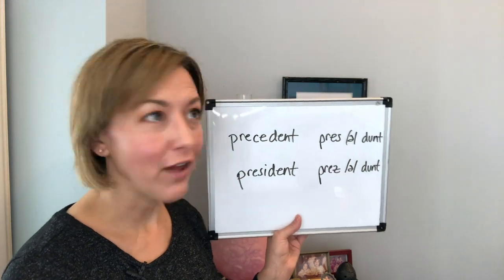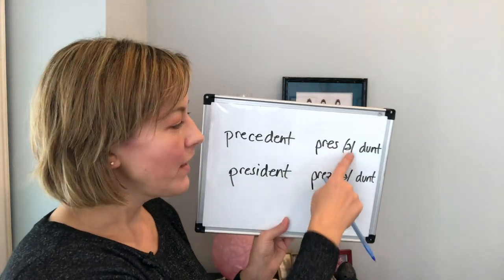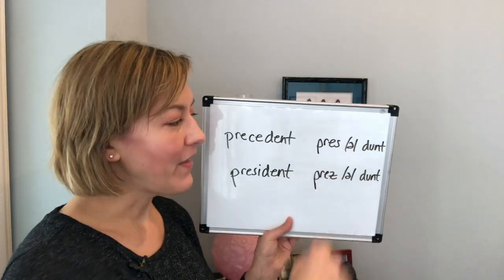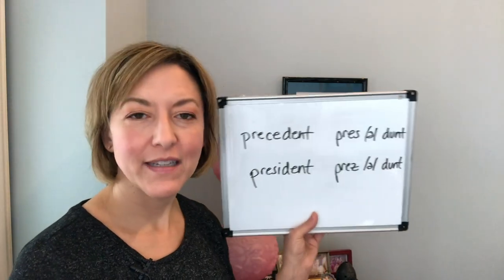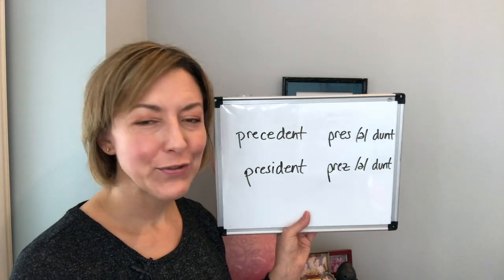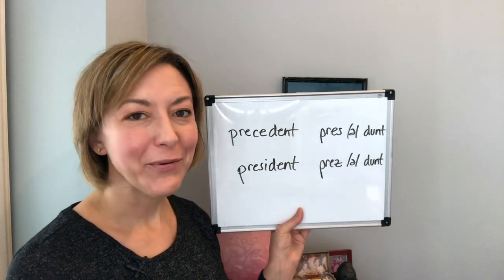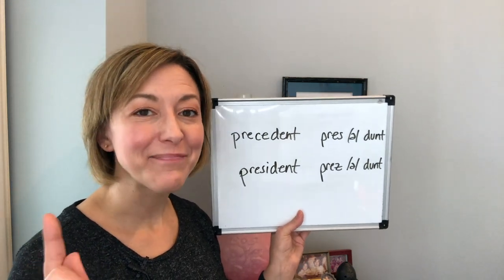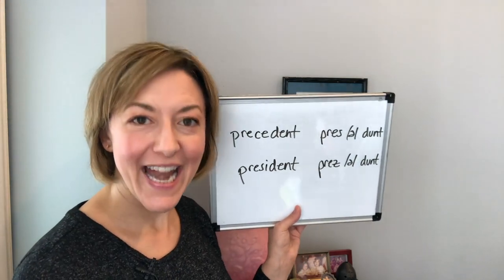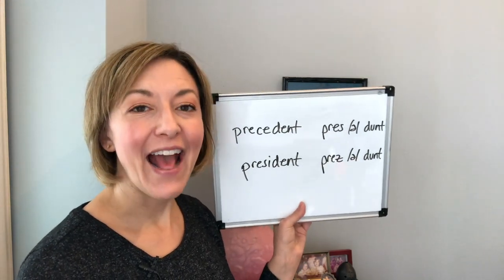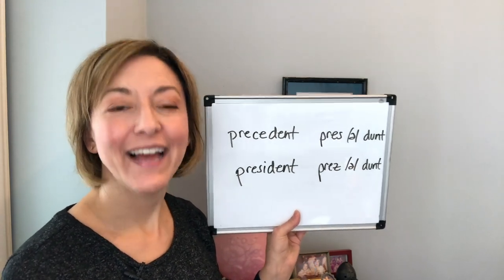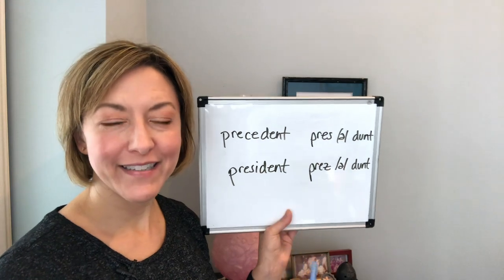Then move to the short 'uh' sound with a relaxed mouth, and end with 'dunt.' To do this, touch the tip of the tongue to the back of the top front teeth, make a super short 'uh' sound, put the tongue back to the back of the top front teeth, air moves out of your nose for the N, and then pull the tongue down for the T: 'prezz-uh-dunt — precedent.'